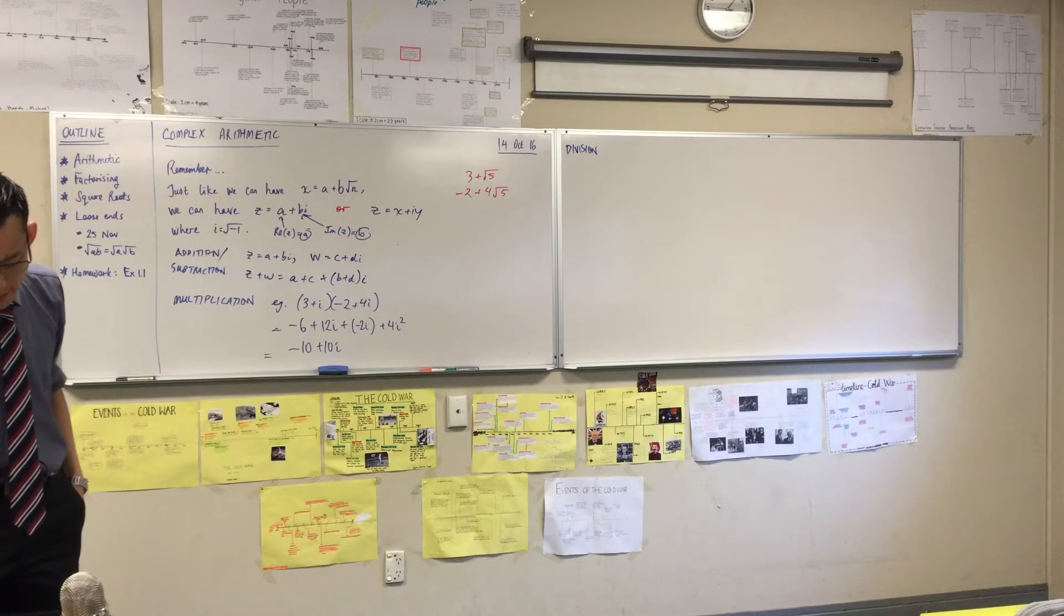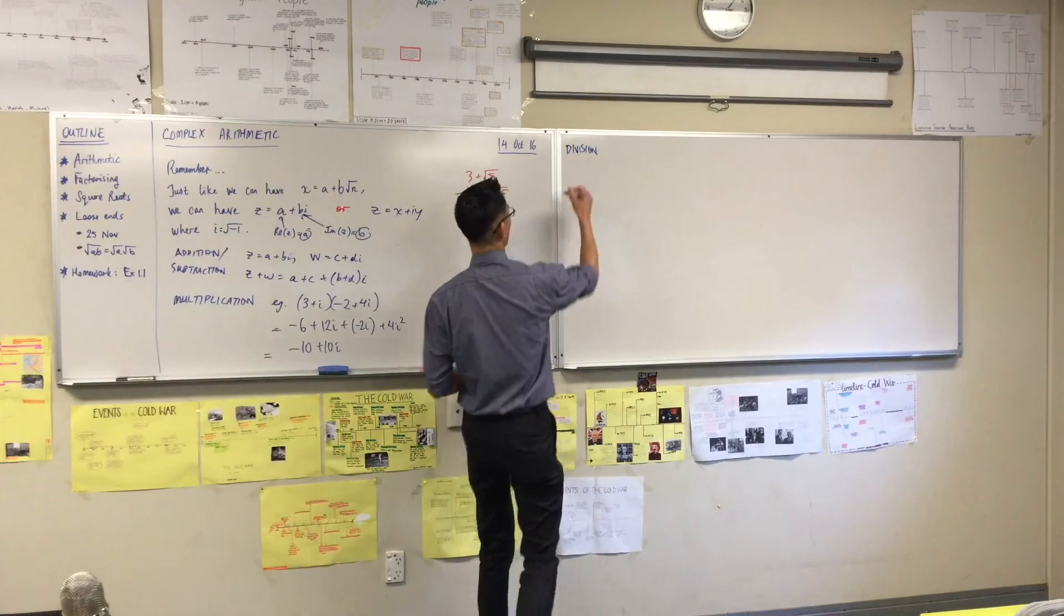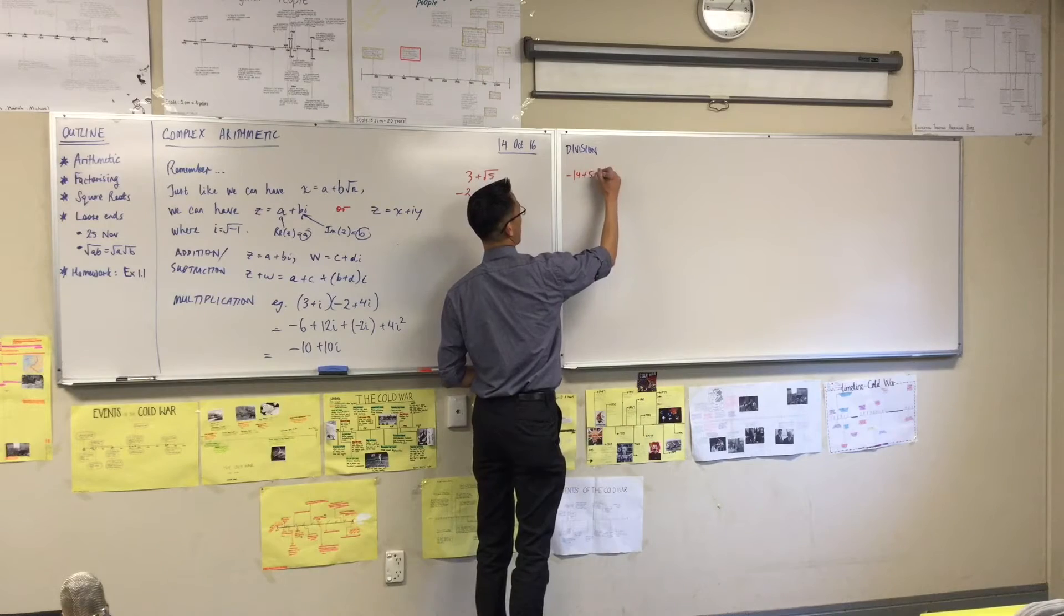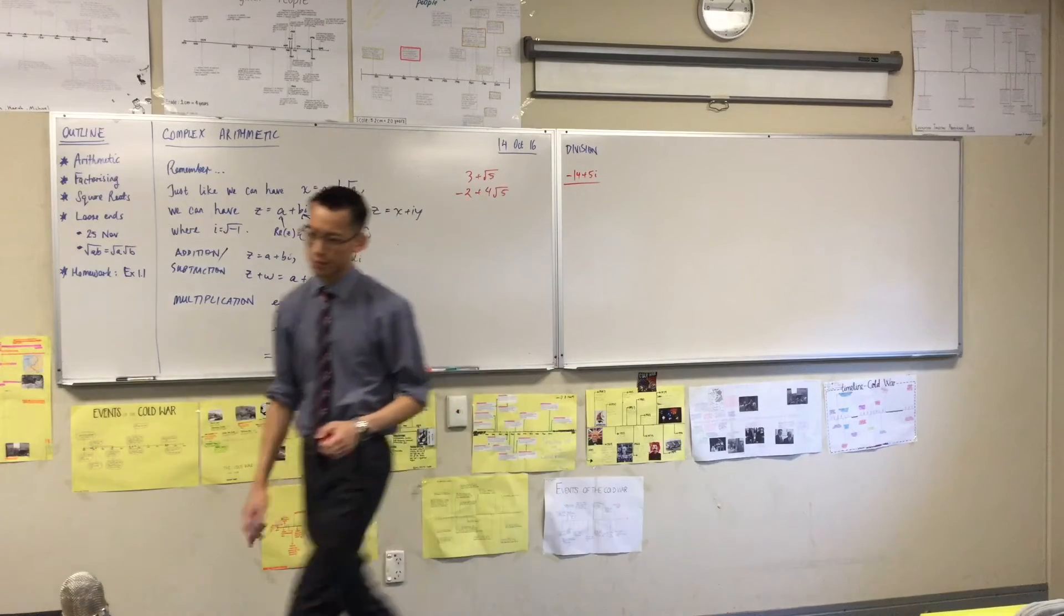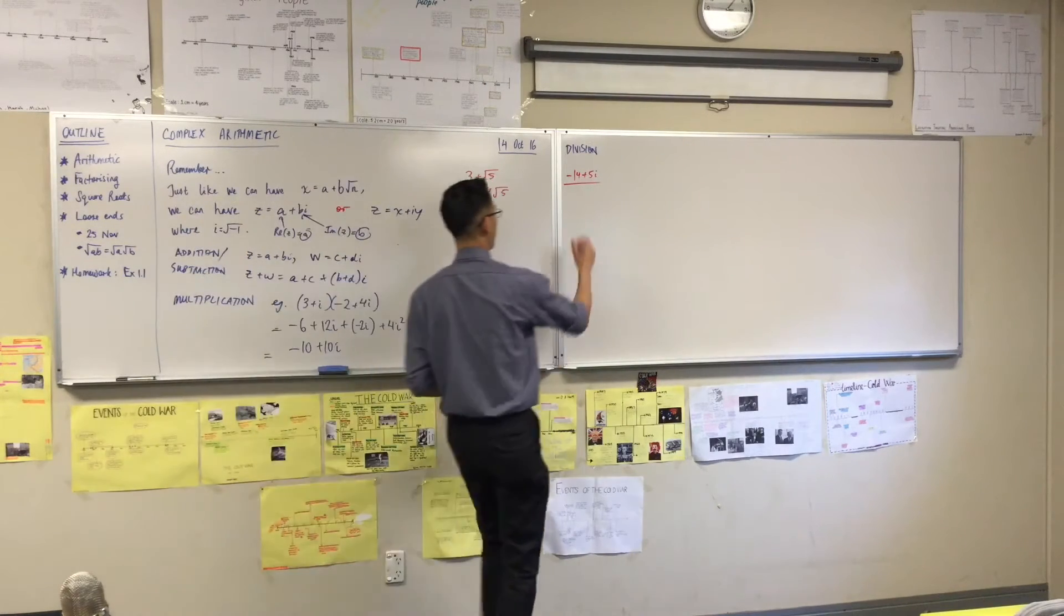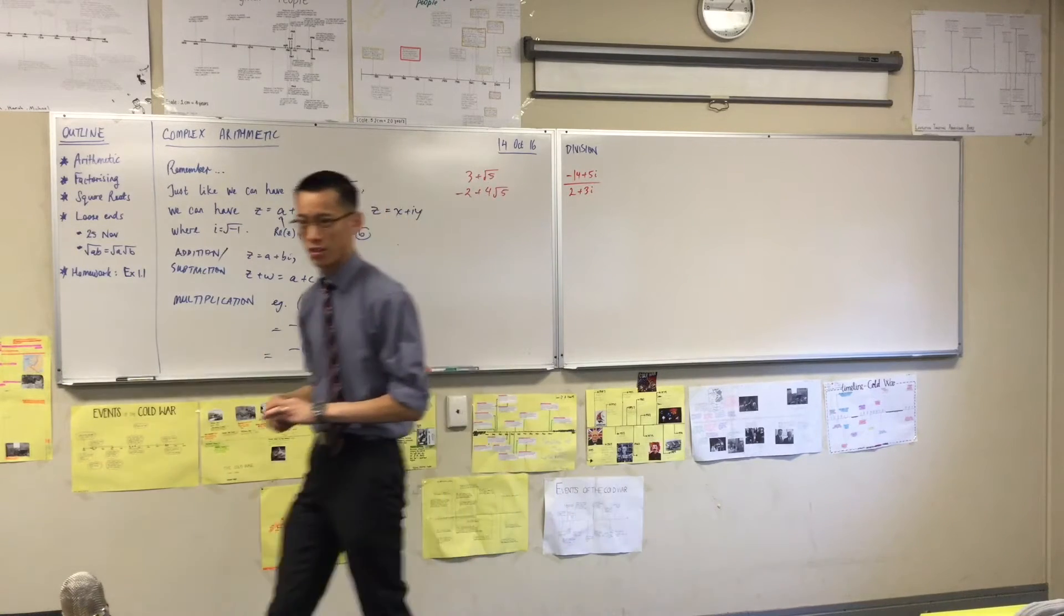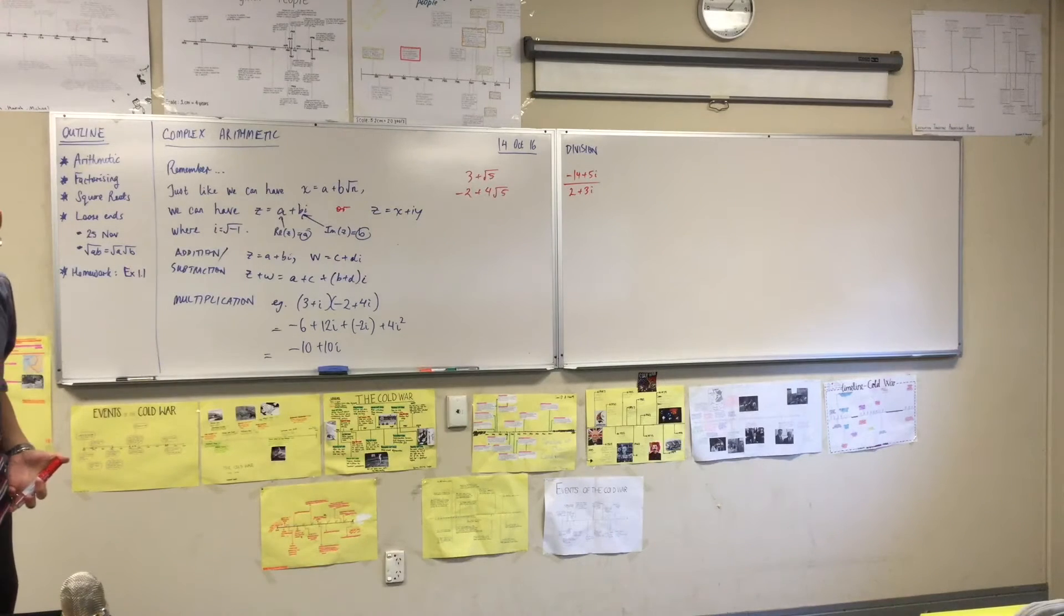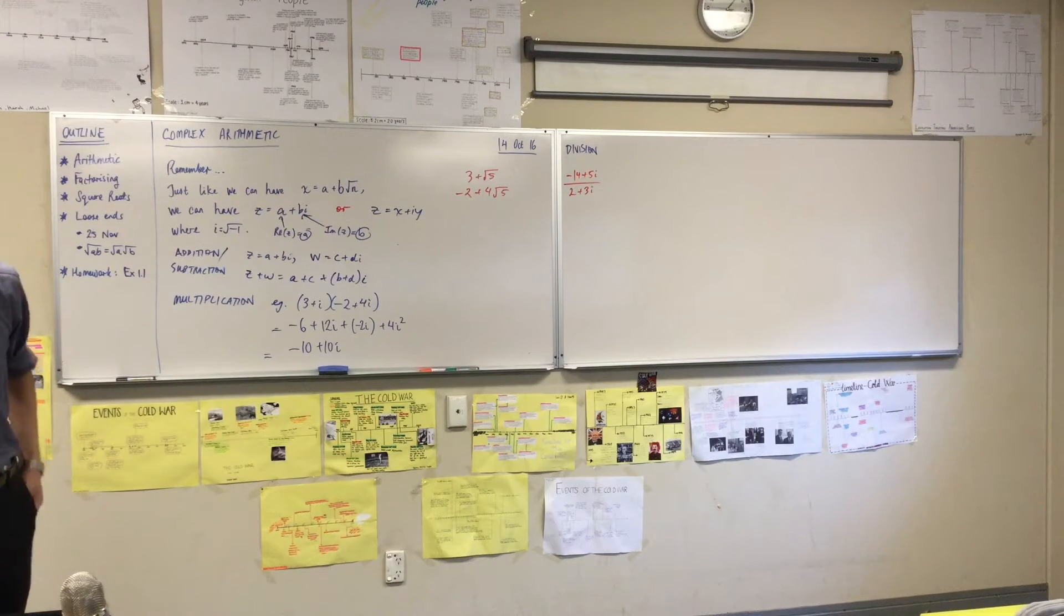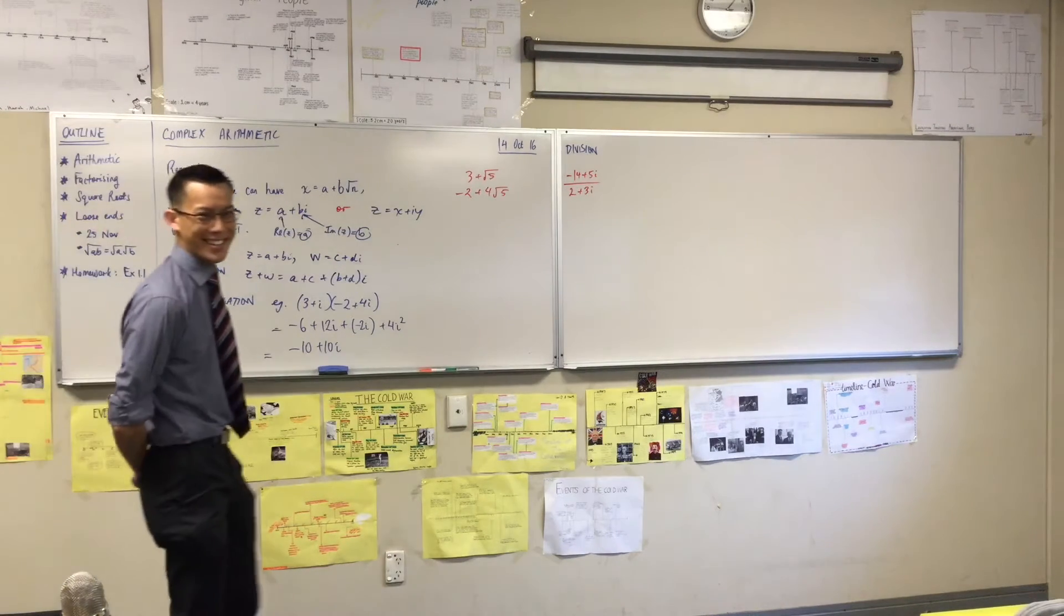So just write down this as an example. Here we go. (-14 + 5i) / (2 + 3i). Okay, so this is the question we're going to do in about three minutes. But before we do that, I want you to ponder, how would you even start such a question, right?